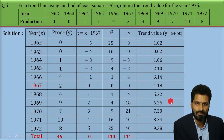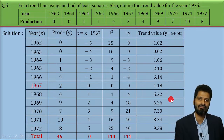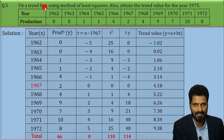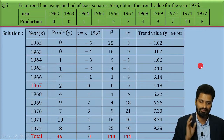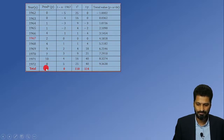That completes step number 3. Now the final step, step number 4: we have to fit a trend line. To fit the trend line, we have to plot these points on a graph. Our original data has years 1962 to 1972, with production minimum 0 and maximum 10. So on X and Y axes we can take 1 cm = 1 year and 1 cm = 1 production index.